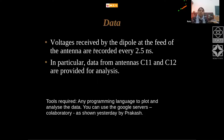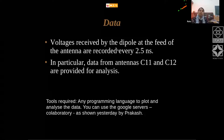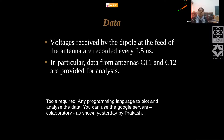We will be looking at data files which contain the voltages recorded from the GMRT dipoles. These are recorded every two and a half nanoseconds. The data for these experiments has been recorded from antennas C11 and C12.